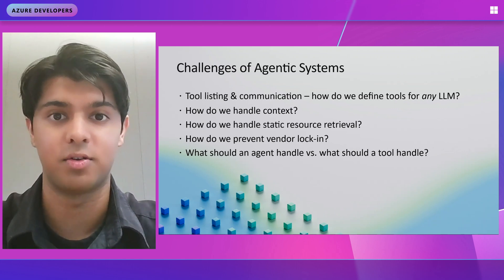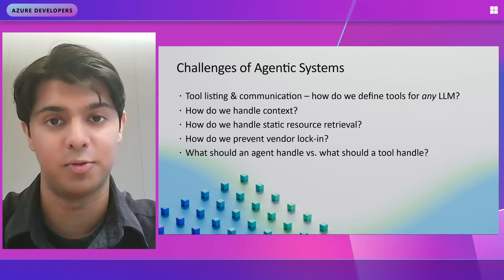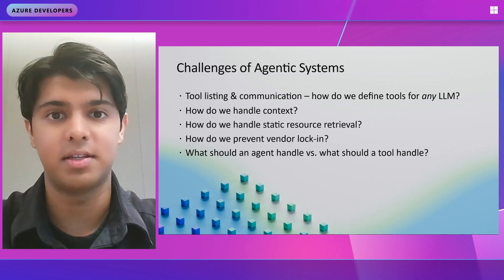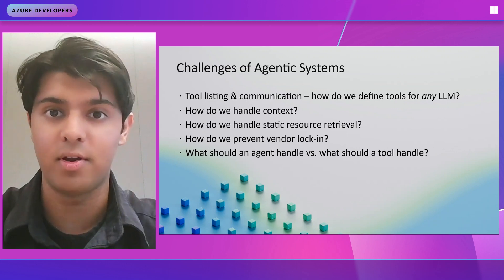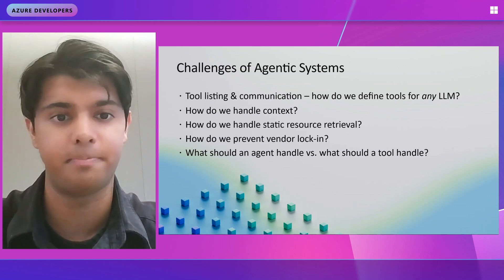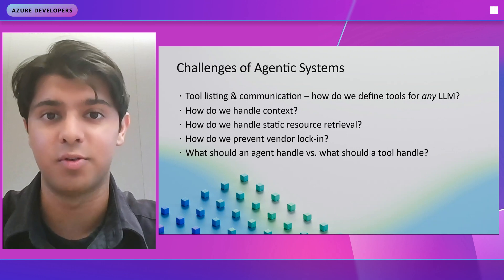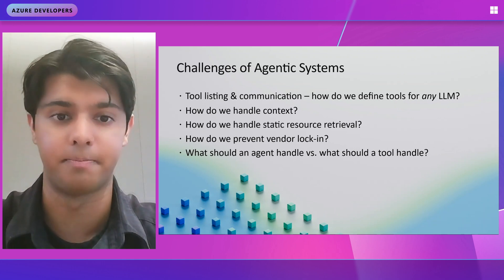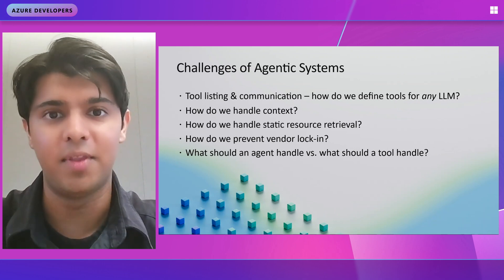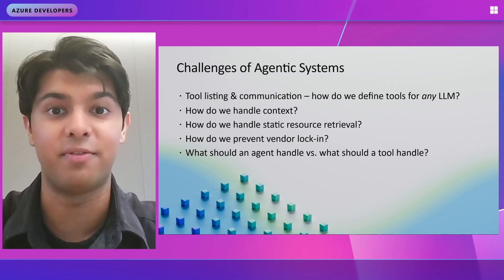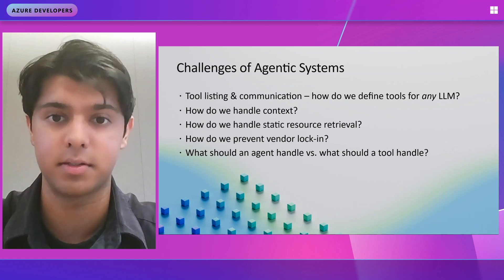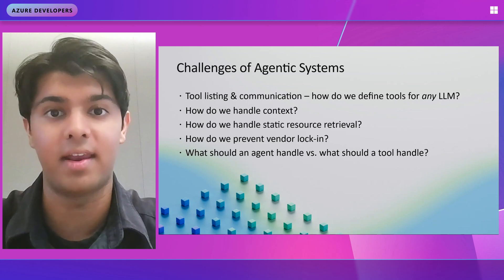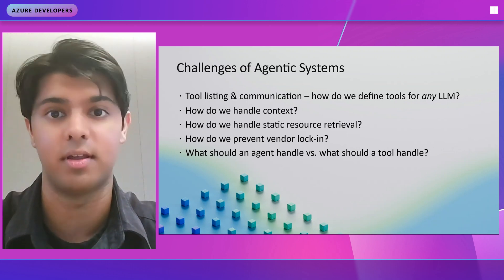If you wanted to build an integration with a certain tool, you'd have to write a custom implementation for the OpenAI tool, function calling, and so on. Second, how do we handle context for all of the agentic operations? How is that handled for one agent versus another? Then how do we handle static resource retrieval, such as things that don't change much like file systems or documents? How do we prevent vendor lock-in, so that an agent isn't overly opinionated and is flexible to all the needs of your company or product? And lastly, how do we design agents — what should an agent handle versus what should a tool handle, and how do we manage the contract between the agent and the tool?